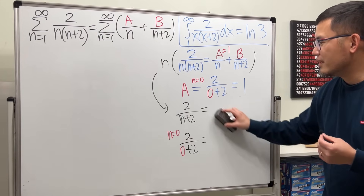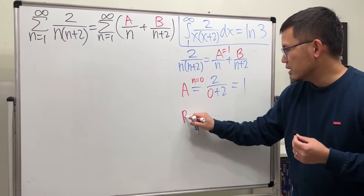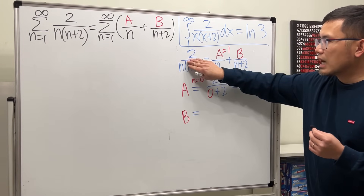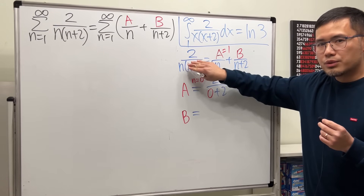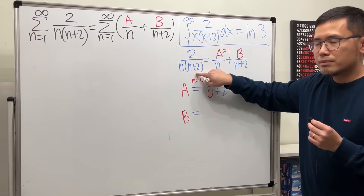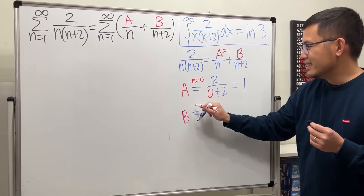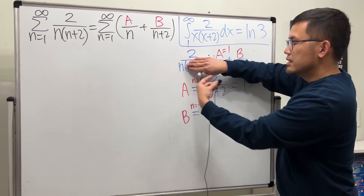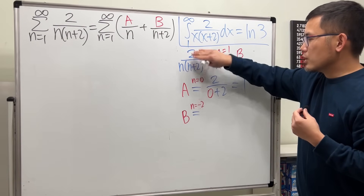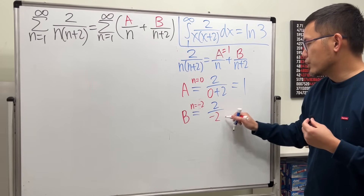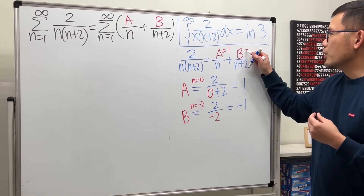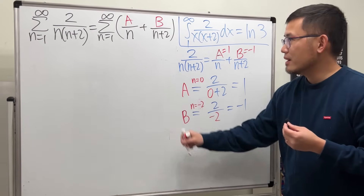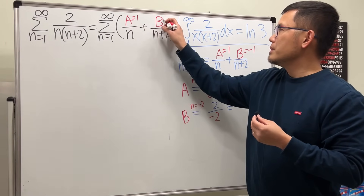Now let's use the cover-up method to find B. B has the denominator n plus 2. We cover that up in the original and ask: how can we make n+2 equal to 0? We need n = negative 2. Pick negative 2 and put it into the remaining expression: 2 over negative 2, which is negative 1. So B equals negative 1.